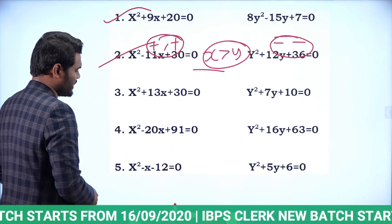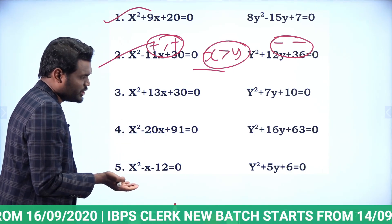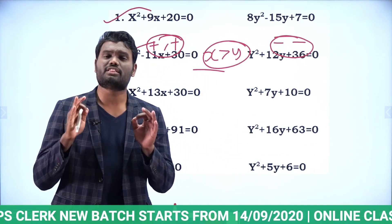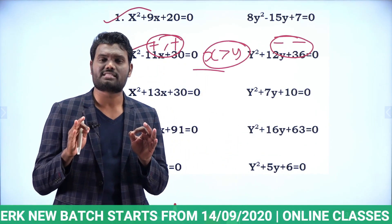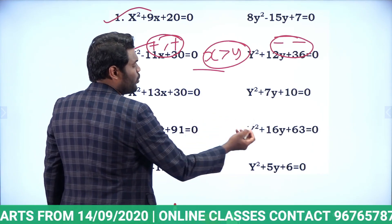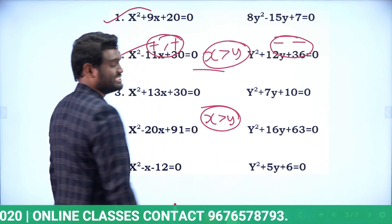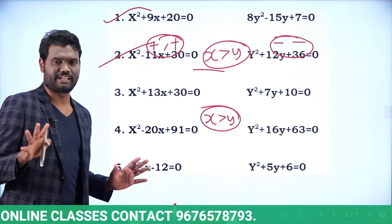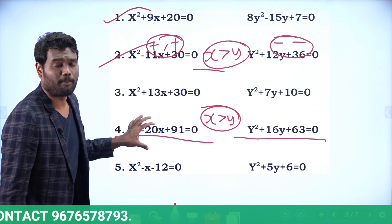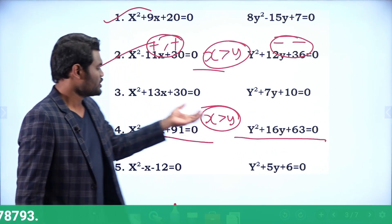Next: x² − 20x + 91 = 0 and y² + 16y + 63 = 0. X values are positive roots and y values are negative roots, so directly the answer is x > y. Just a fraction of seconds — you do not need to solve the full question.